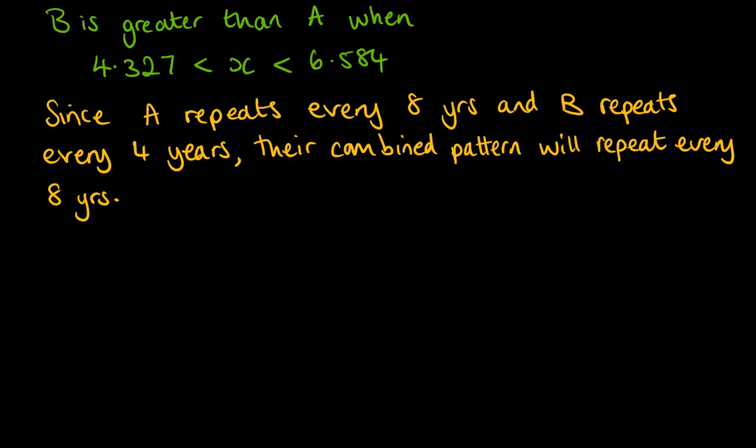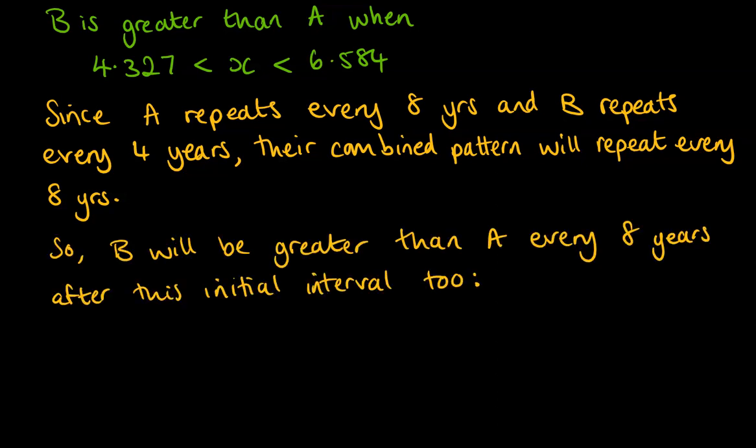So we need to write in that we could add eights on. So we would go 4.327 plus eight, but we could do eight a number of times. So we put an N as a counter. So we could do eight times one, eight times two, eight times three. We could do it as many times as we want. And the same for the upper limit of our interval, we can add on multiples of eight.